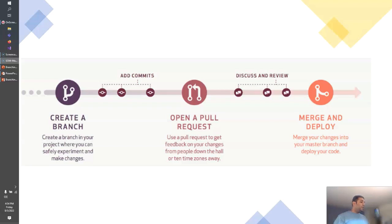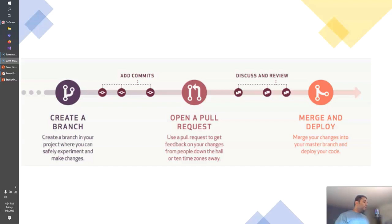Once reviewers approve the pull request, the changes will get merged into the target branch — that is the release or master branch. In this way, with the help of branches and pull requests, the development team can safely make changes and merge them into the release and master branch. Let's see it in action — how we can do it in Azure DevOps.